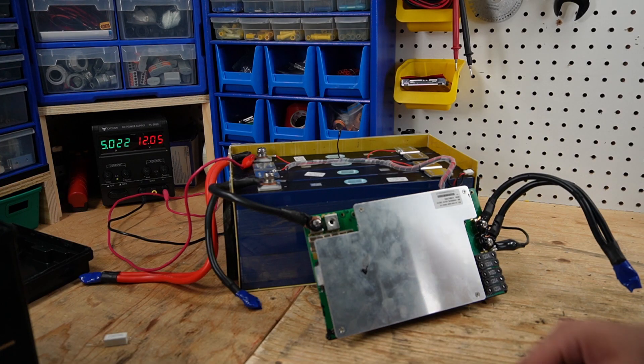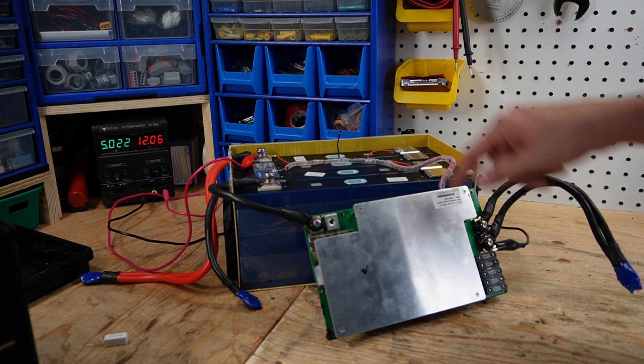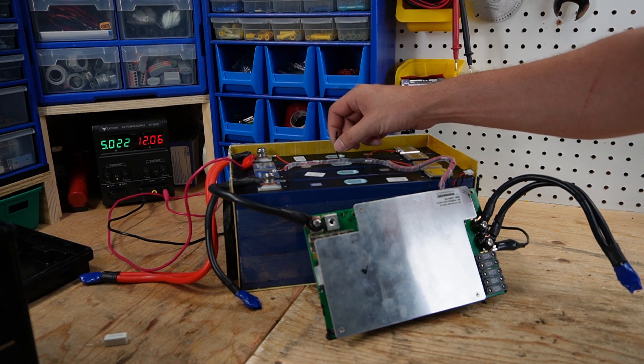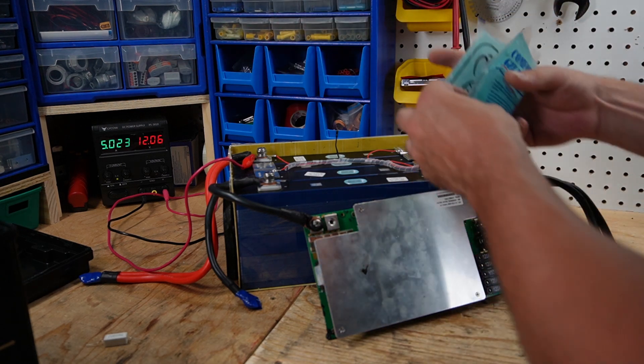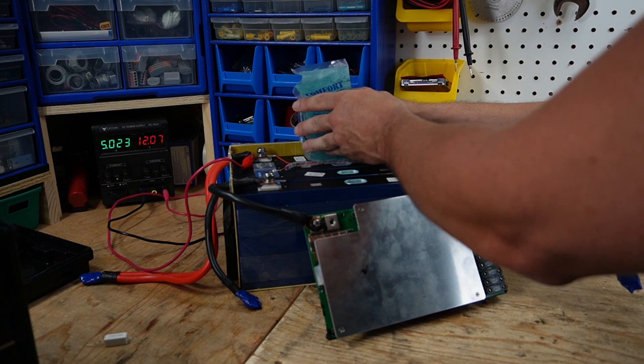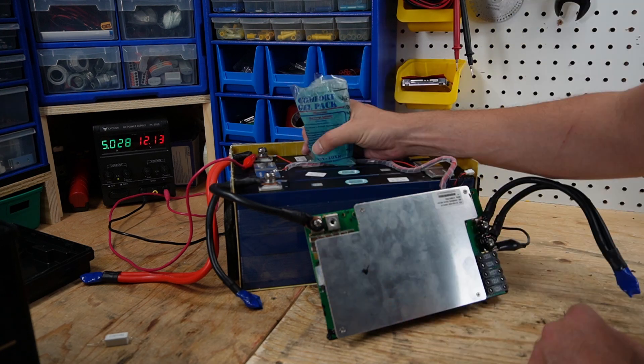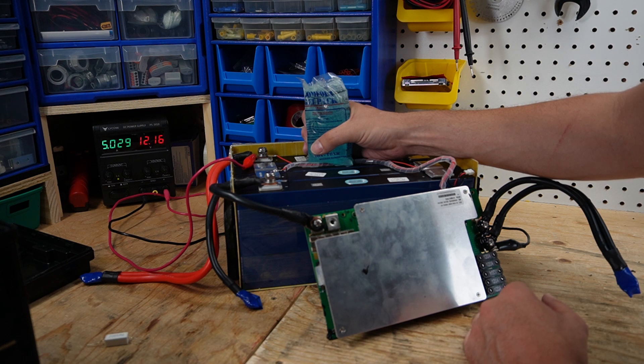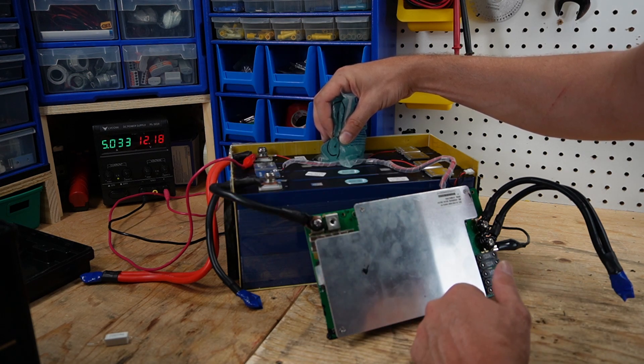Low temperature charging protection test. I have the BMS hooked back up. I have my negative over here on the P minus and I have my positive on the positive terminal. This is the temperature sensor. I am now charging with 5 amps. I will put this cold pack onto the temperature sensor and see what happens. I'm going to adjust the thermostat. This does not seem to be stopping the charging. We do not appear to have low temperature charging protection. I've been holding this pack here now for several minutes. Charging does not seem to be stopping.